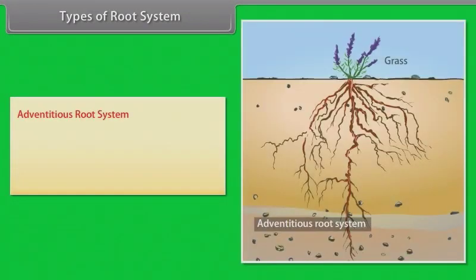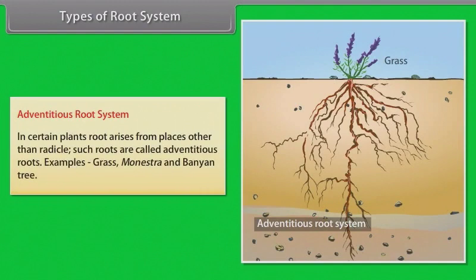Adventitious root system: in certain plants, roots arise from places other than the radicle. Such roots are called adventitious roots. Examples: grass, Monstera, and banyan tree.